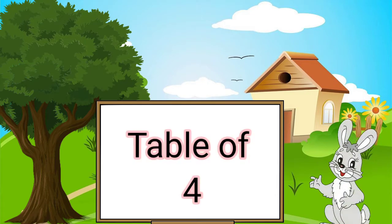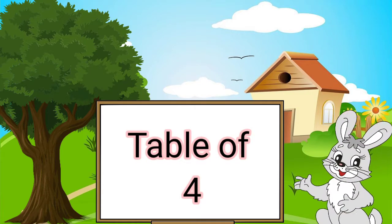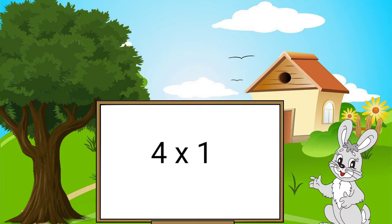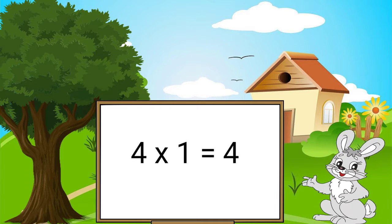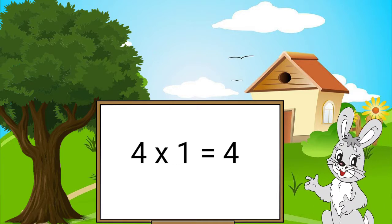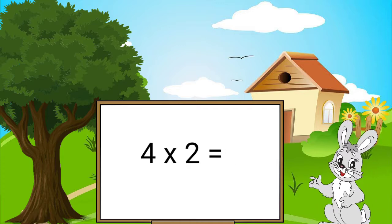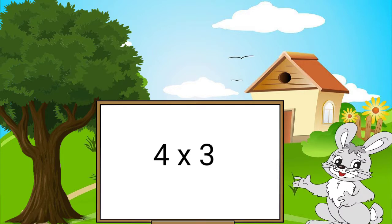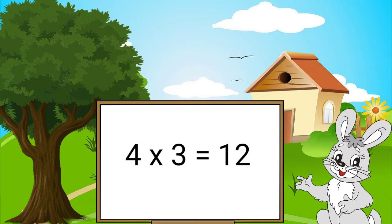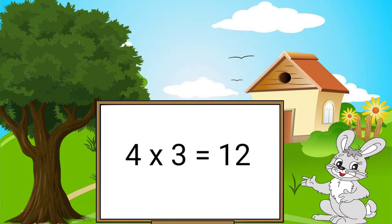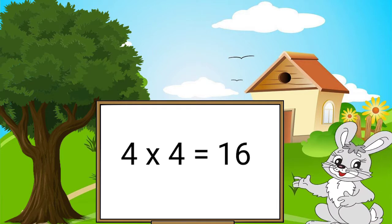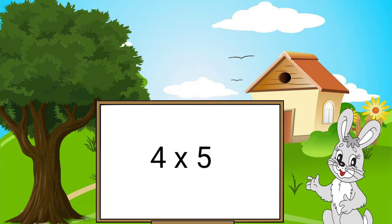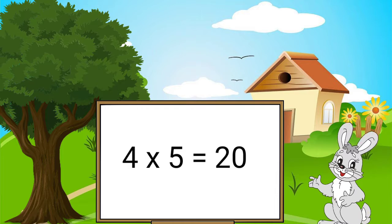Table of 4. 4 1's are 4, 4 2's are 8, 4 3's are 12, 4 4's are 16, 4 5's are 20.